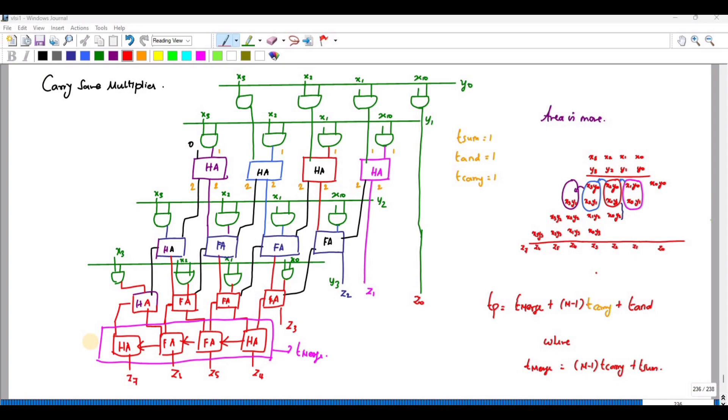The drawback of array multiplier is that there are a large number of critical paths. Therefore, the efficient realization of multiplication can be obtained using this carry-save multiplier by passing the carry downwards instead of passing the carry diagonally. For that, we have included the extra vector merging adder, T-merge, in order to generate the final result.